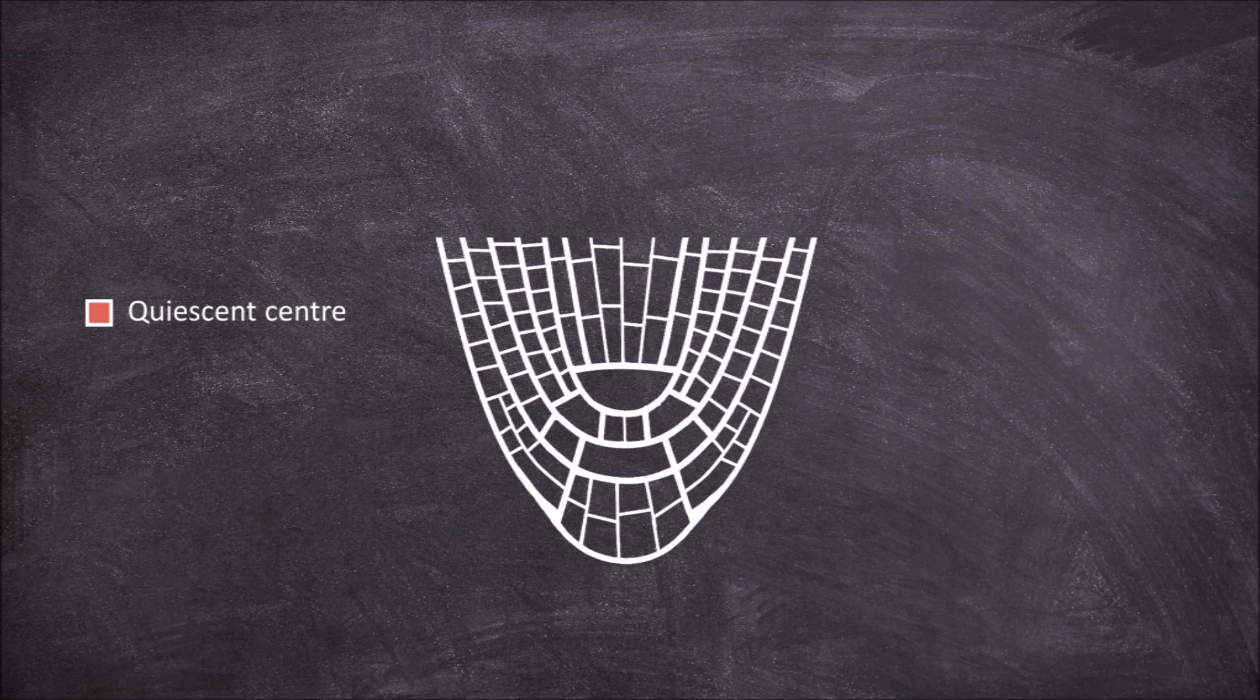The quiescent center is an inactive area in the center of the root apical meristem consisting of cells that divide really slowly or not at all.